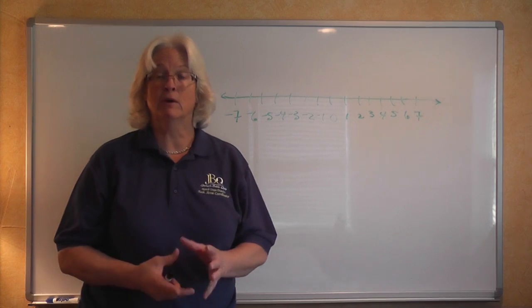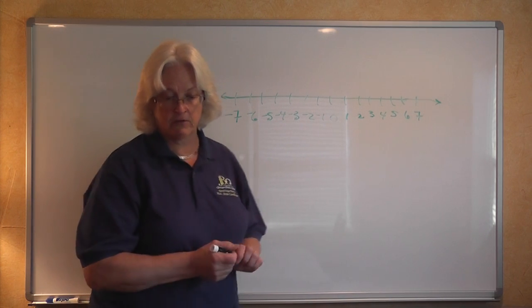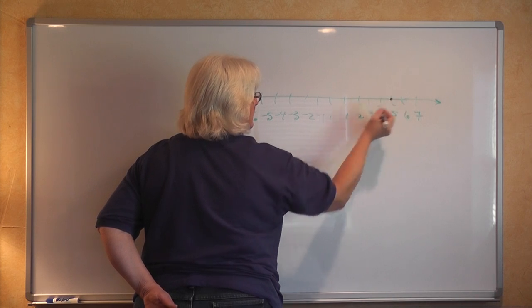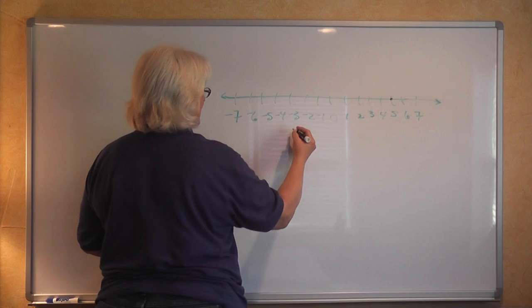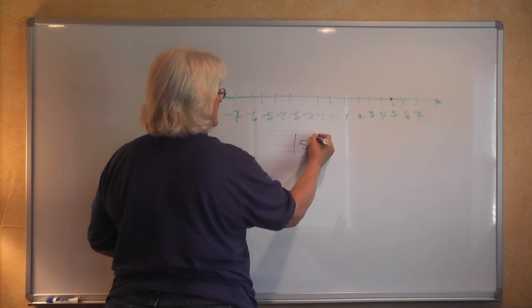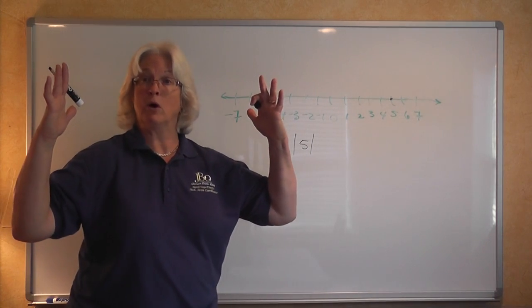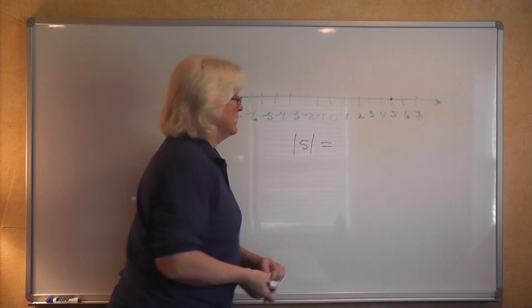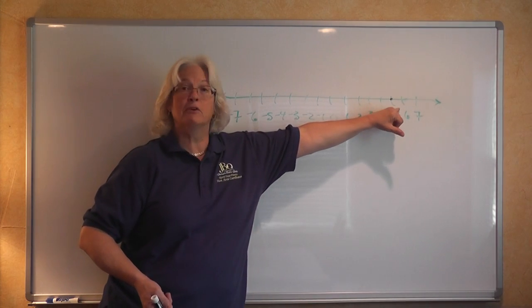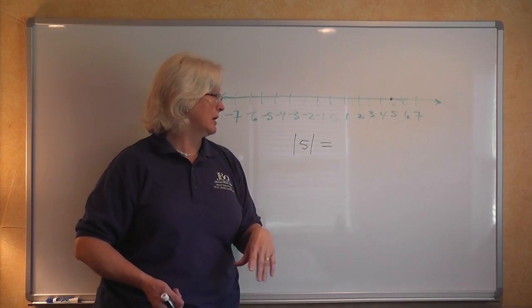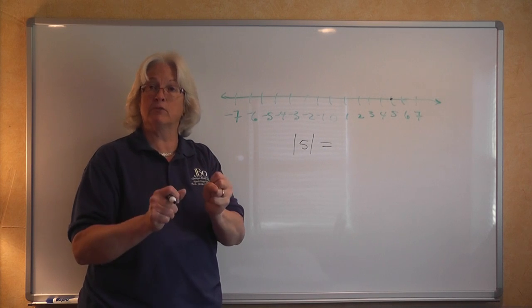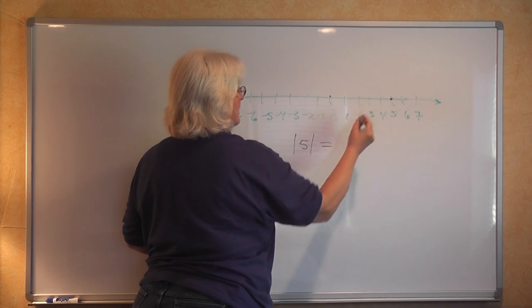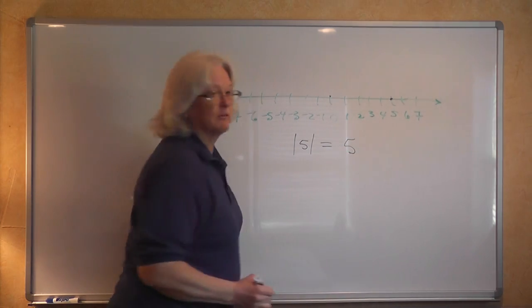Absolute value is the distance from zero. If we want to know what the absolute value of 5 is — indicated with two vertical bars, like a 5 between two poles — that's asking how far is positive 5 from zero on the number line. If there's no sign in front of the number, you know that it's positive. Starting at zero: 1, 2, 3, 4, 5. The absolute value of positive 5 is 5.